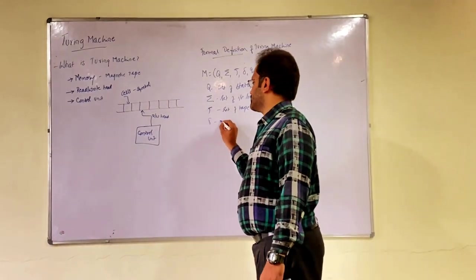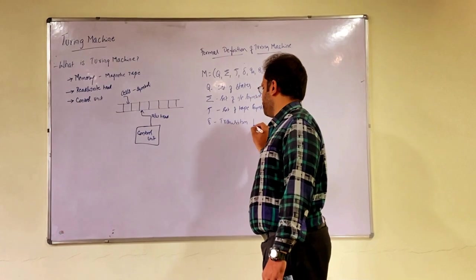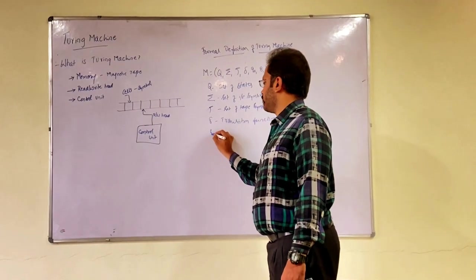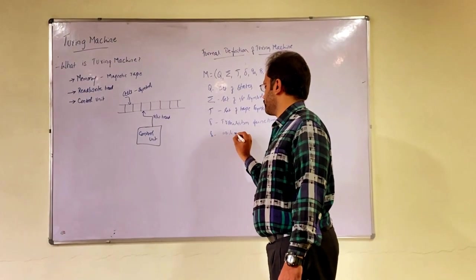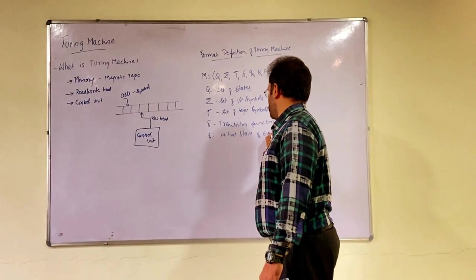Delta is transition function. We will see how to write transition in some time. So transition function is Delta. Q0 is initial state, Q0 belongs to Q.